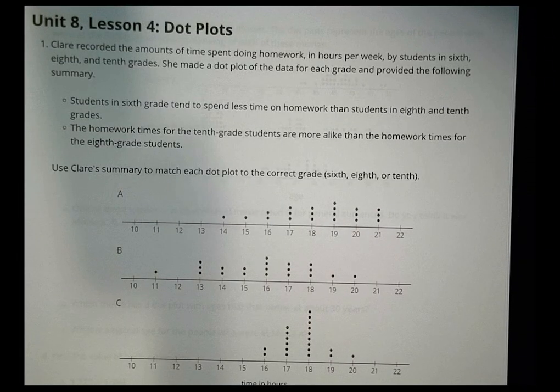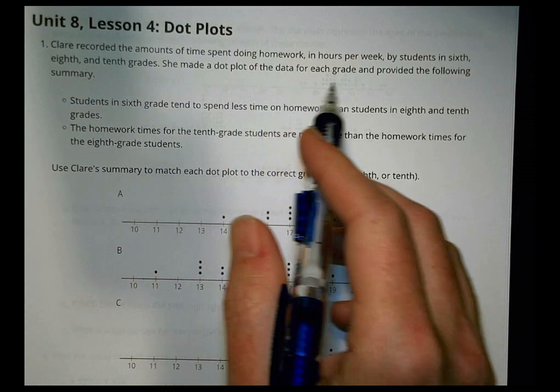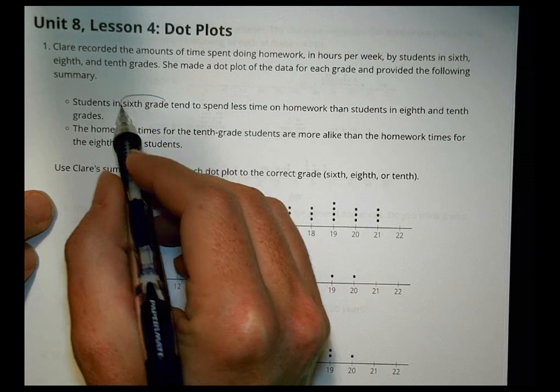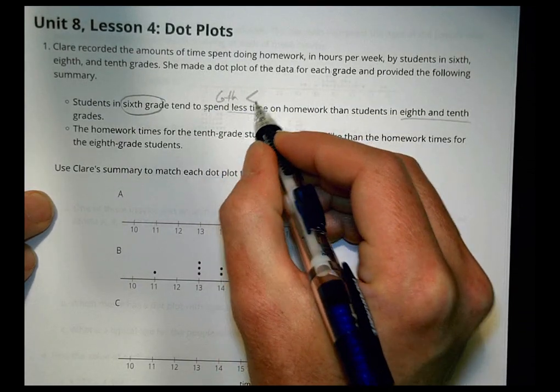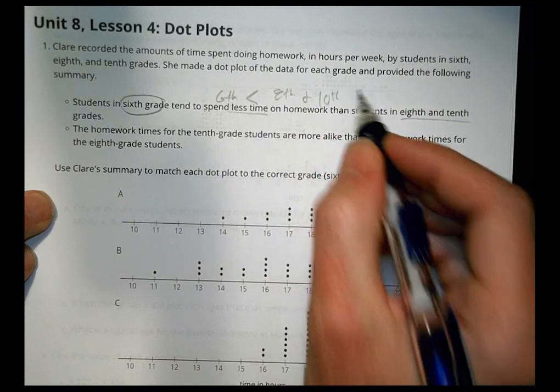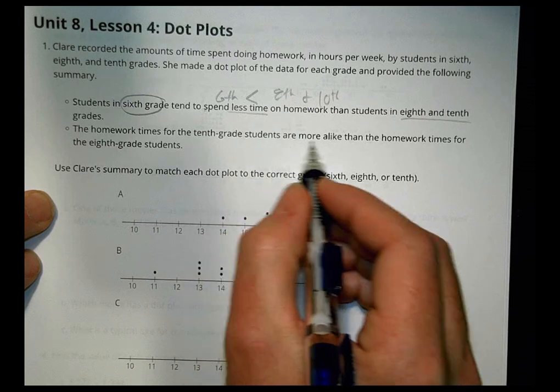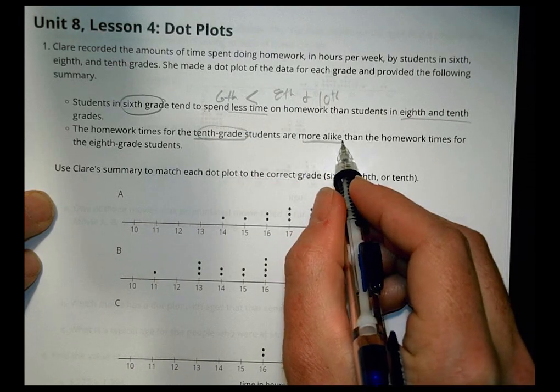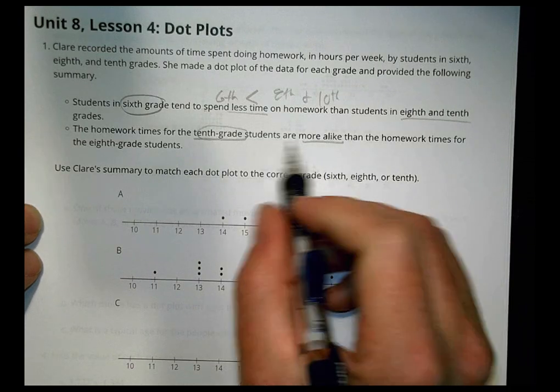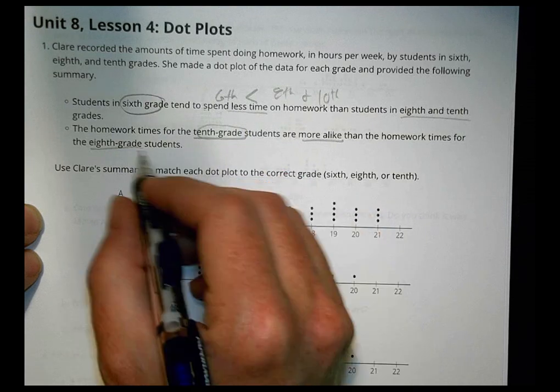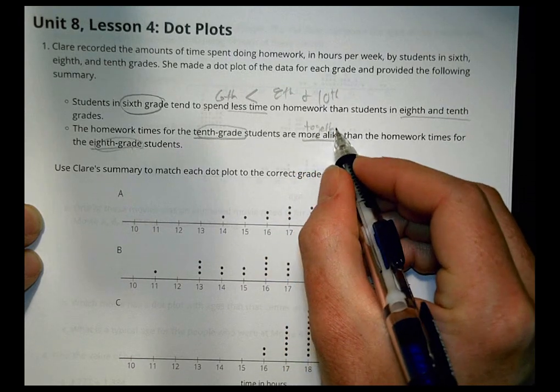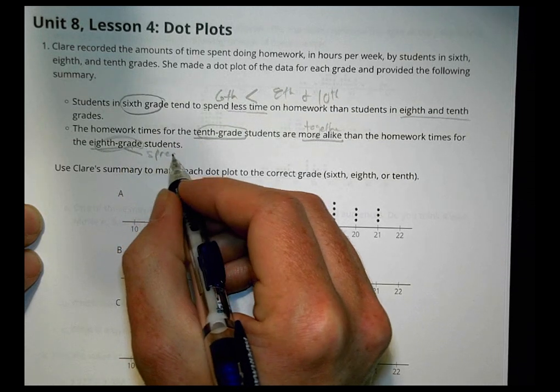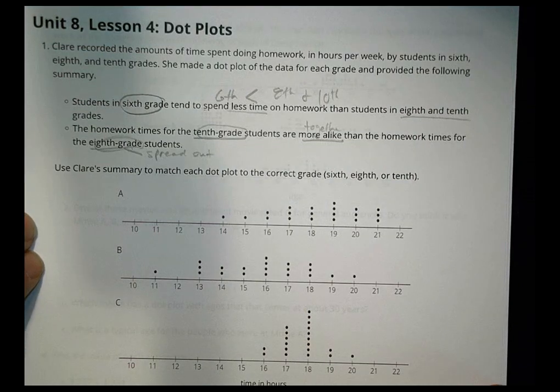Claire recorded the amounts of time spent doing homework in hours per week by students in 6th and 8th and 10th grade. Sorry, this is homework, by the way. She made a dot plot of the data for each grade and provided the following summary. She said students in 6th grade tend to spend less time on homework than students in 8th and 10th. So 6th grade is spending less time than 8th and 10th graders. And then she said the homework times for 10th grade students are more alike. So 10th grade students are very similar. Then for 8th grade. So 8th grade is not alike. So more alike means that they're going to be kind of together. The data is going to be together. And if they're not together, not alike, it's more what we call spread out a little bit. So I'll use Claire's summary to match with each one of the pictures here.